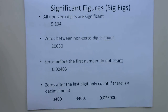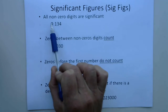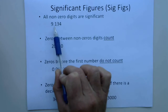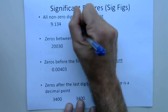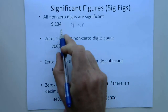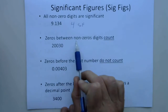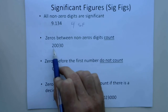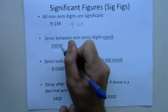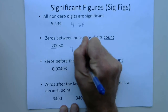So when you just look at a number, how can you tell what kind of instrument it was made with and how many digits are significant? The easiest rule is that all non-zero digits are significant. So in the number 9.134, none of the digits are zeros, so we have four significant figures. With zeros it's a little tougher. Zeros between non-zero digits always count. So in a number where zeros are between the two and the three, those count as significant figures, giving a total of four significant figures.